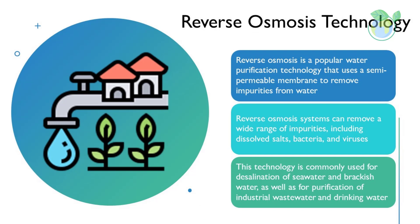Reverse Osmosis is a popular water purification technology that uses a semi-permeable membrane to remove impurities from water. The membrane allows only water molecules to pass through, while contaminants are left behind. Reverse osmosis systems can remove a wide range of impurities, including dissolved salts, bacteria, and viruses. This technology is commonly used for desalination of seawater and brackish water, as well as purification of industrial wastewater and drinking water.